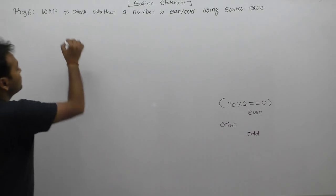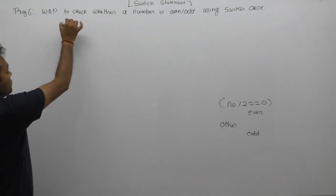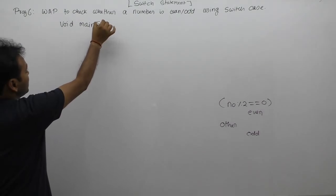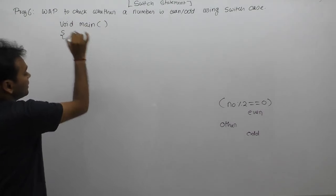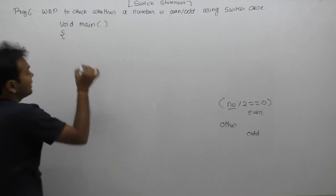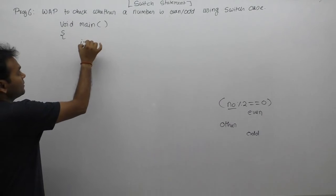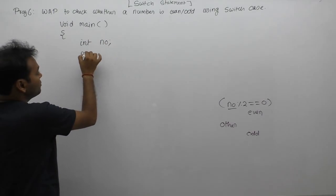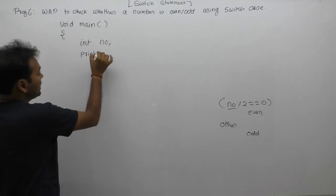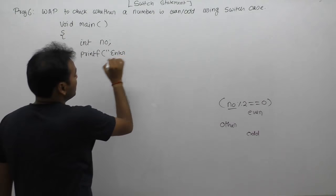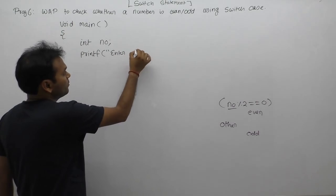We'll solve this problem using switch statements. First, we declare the required variables. In this case, only a single variable is required - a number variable of integer type. Then we read input from the keyboard with the help of